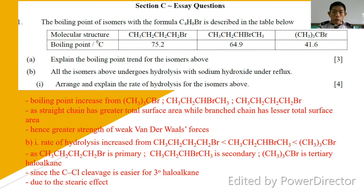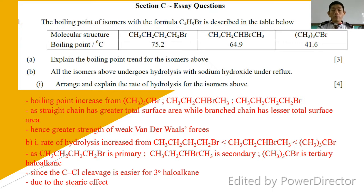But if the question asks about SN1 and SN2 mechanism, especially SN2, then the order is reversed. When asked about SN2 mechanism, a primary haloalkane is the easiest to undergo hydrolysis compared to secondary, while tertiary is the most difficult for SN2. Looking at the way this question is asked, it is asking generally which of primary, secondary, or tertiary haloalkane is easiest to undergo hydrolysis.